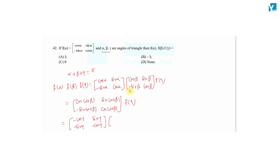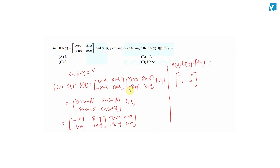Together with f(γ) = [cos γ, sin γ; -sin γ, cos γ], we multiply. The top-left element: (-cos γ)(cos γ) + (sin γ)(-sin γ) = -cos²γ - sin²γ = -(cos²γ + sin²γ) = -1. The top-right element: (-cos γ)(sin γ) + (sin γ)(cos γ) = 0. The bottom-left element: sin γ · cos γ - cos γ · sin γ = 0. The bottom-right: -sin²γ - cos²γ = -1.